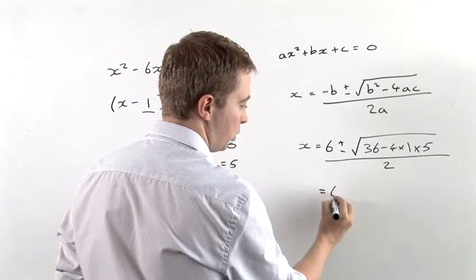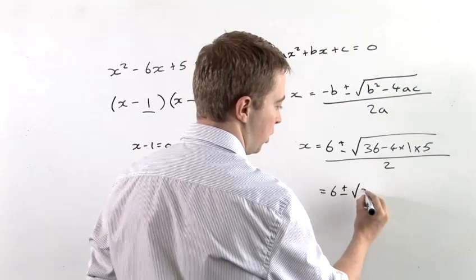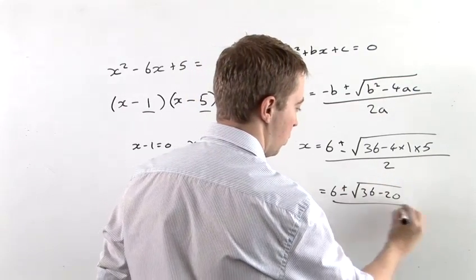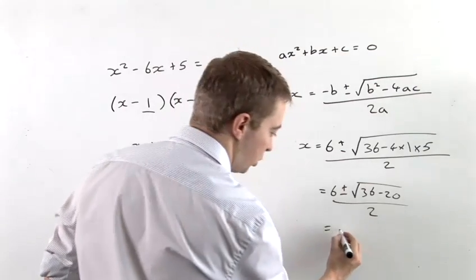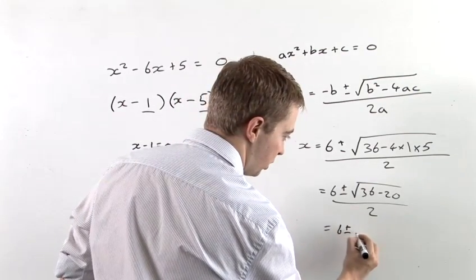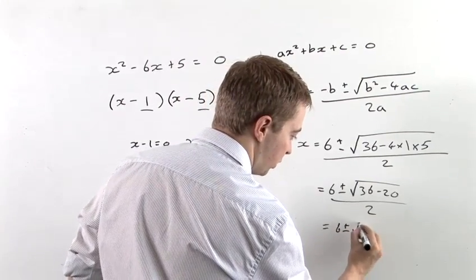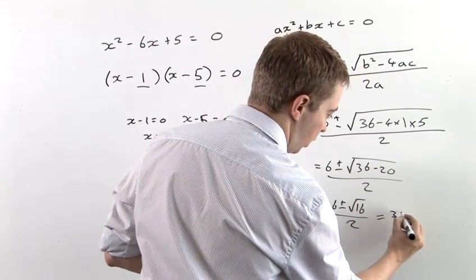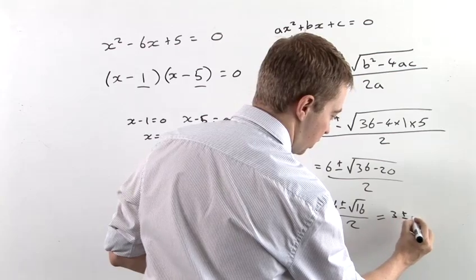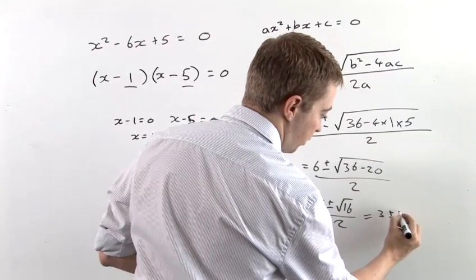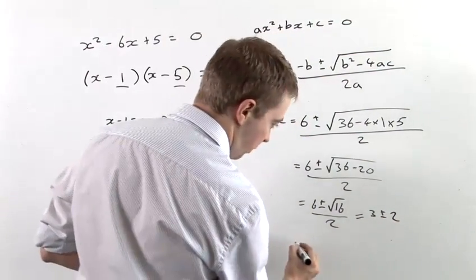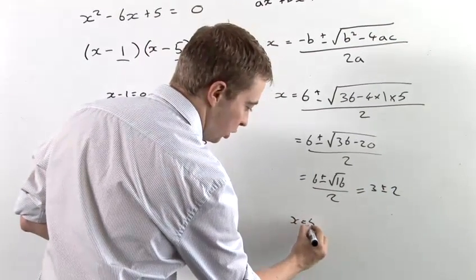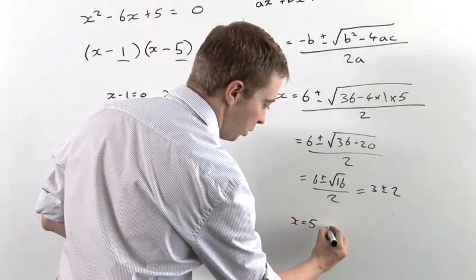So this is equal to 6 plus or minus the square root of 36 minus 20, all over 2, which is equal to 6 plus or minus the square root of 16 over 2, which is 6 plus or minus 4 over 2. And therefore, x is equal to 3 plus 2, which is 5, or 3 minus 2, which is 1.